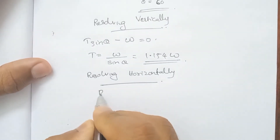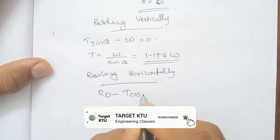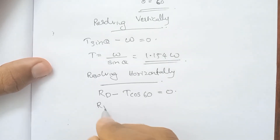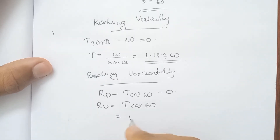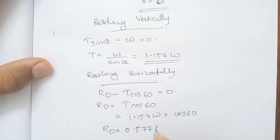Rd minus T cos 60 equals 0, so Rd equals T cos 60. Substituting T equals 1.154W into cos 60, the answer is Rd equals 0.577W.